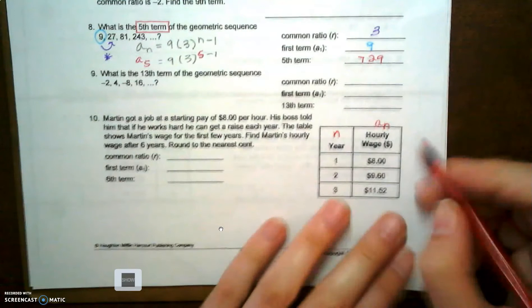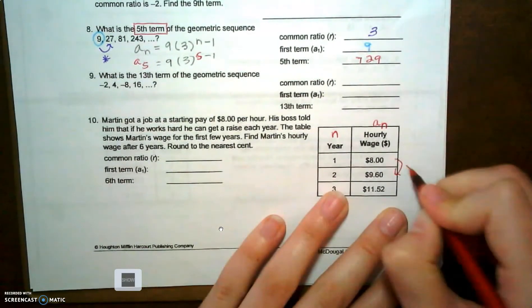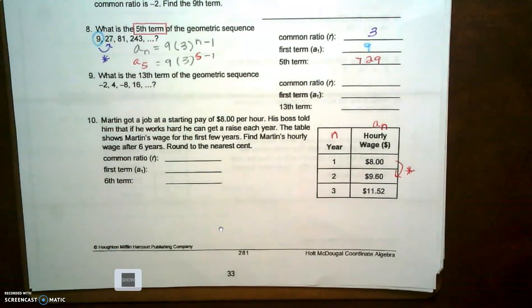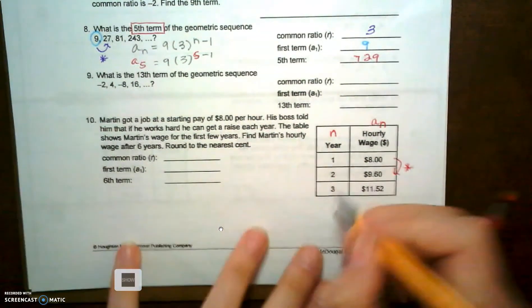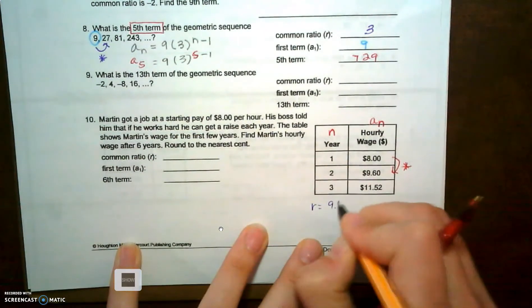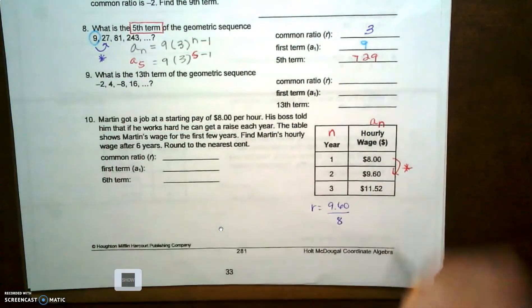So I'm going to say that my ratio r equals nine point six zero divided by eight, and I'm going to get one point two.